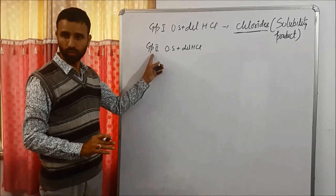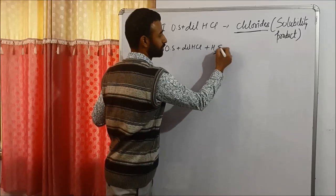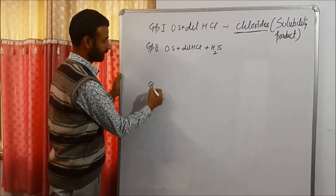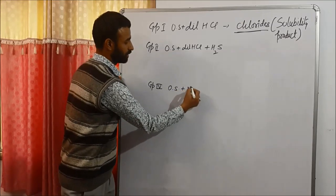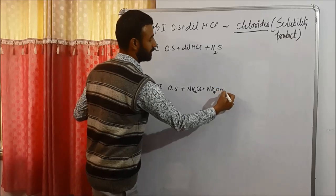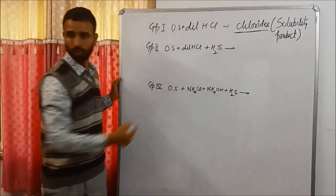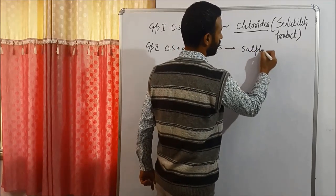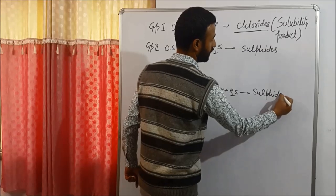For group 2, we add dilute HCl and then H₂S to the original solution. For group 4, what we add is NH₄Cl, NH₄OH, and then H₂S. In both group 2 as well as group 4, sulfides are formed — we get sulfides in both cases.